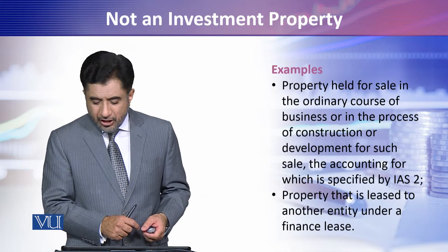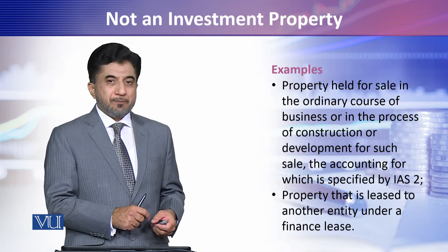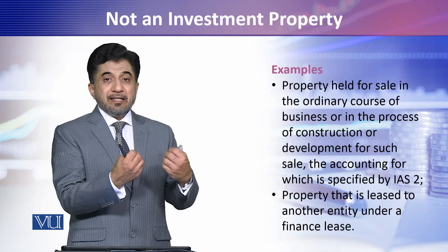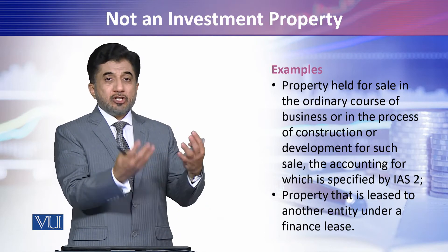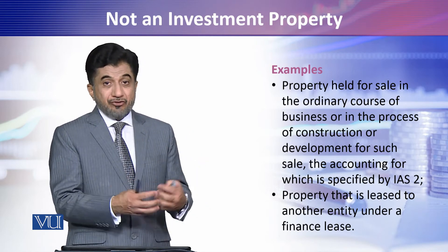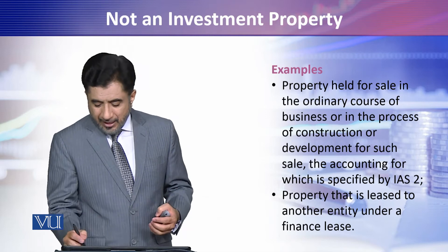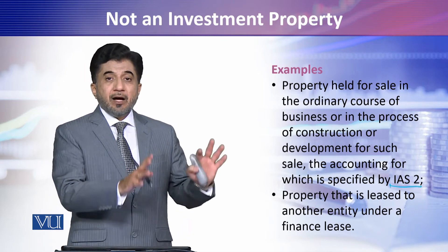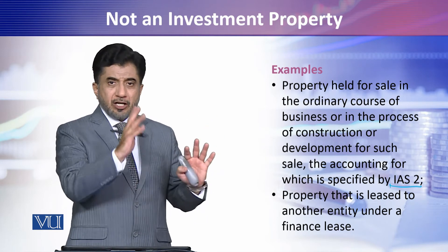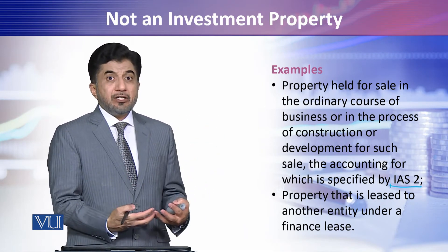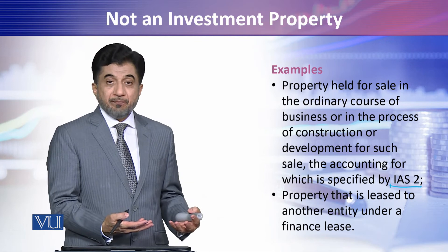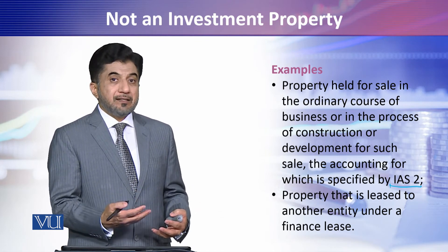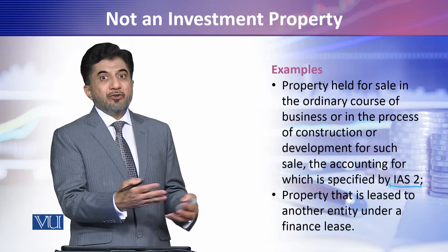Property held for sale in the ordinary course of business — you have a building, supposedly inventory. This is covered in IAS 2. You have 8, 10, 15, 20, 150 houses and you are waiting to sell those houses. That again would not be classified under investment property — that is inventory.